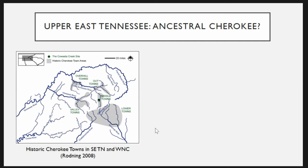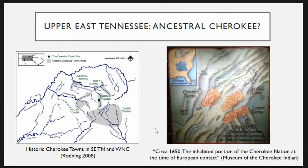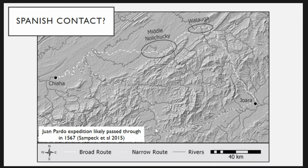A 2008 map shows the areas of Cherokee towns known during the period of European contact. A map from the Museum of the Cherokee Indian in Cherokee, North Carolina — where the Eastern Band of the Cherokee live — shows a snapshot of their museum exhibit depicting where the Cherokee were living around 1650 at European contact. But it shows essentially nothing going on up in northeast Tennessee, where the Runyon site and several other sites are located. Those river valleys have many sites that haven't been explored very closely.